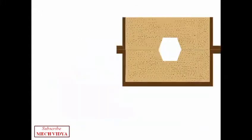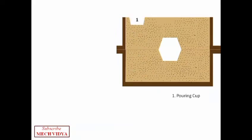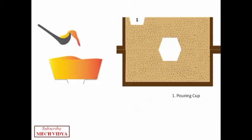Let us try to understand different components of a gating system one by one. The first component is the pouring cup. Let us now magnify the pouring cup to analyze it closely. When we pour the hot molten metal, a lot of turbulence takes place inside the pouring cup, so the pouring cup helps us to reduce the turbulence by allowing the molten metal to settle for some time.